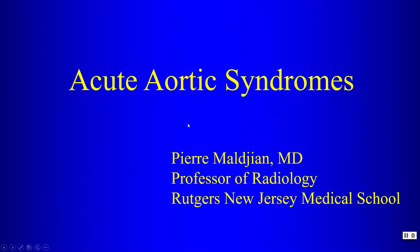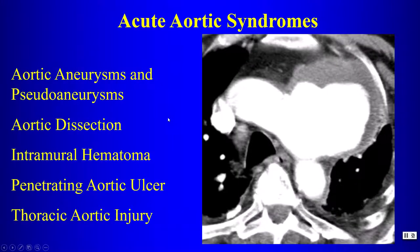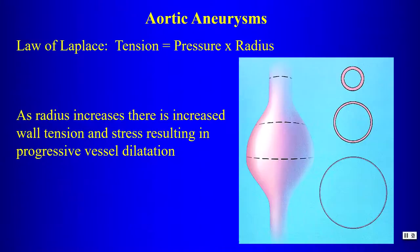Today we will be talking about acute aortic syndrome. We will discuss aortic aneurysms and pseudoaneurysms, dissection, intramural hematoma, penetrating aortic ulcer, and thoracic aortic injury.